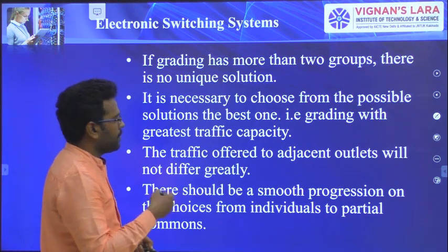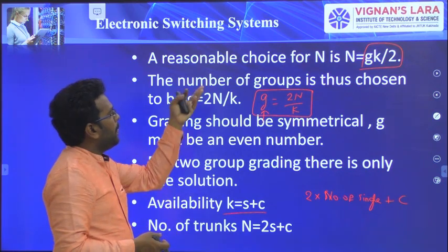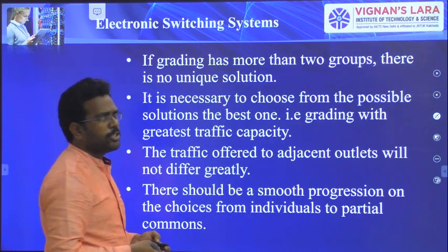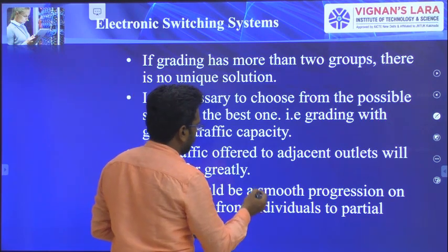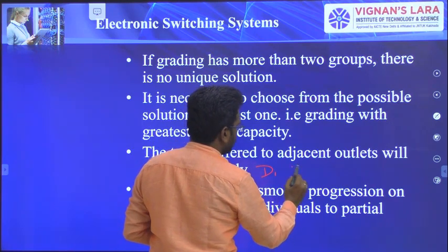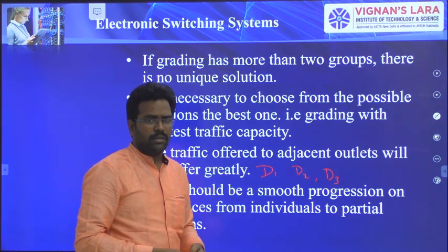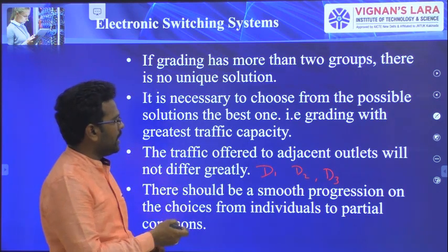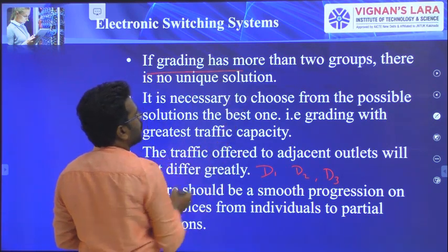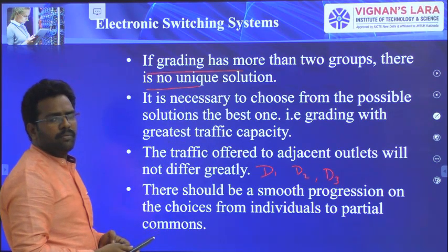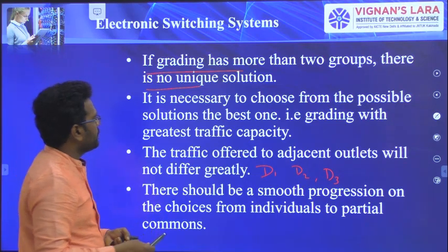For two groups, only one solution exists. But if the number of groups increases, there are more solutions available — different singles, different doubles, different quadruples and so on. Out of those, we have to choose the best possible solution. We need to find the values of D1, D2, D3 for the different solutions and choose the best value.